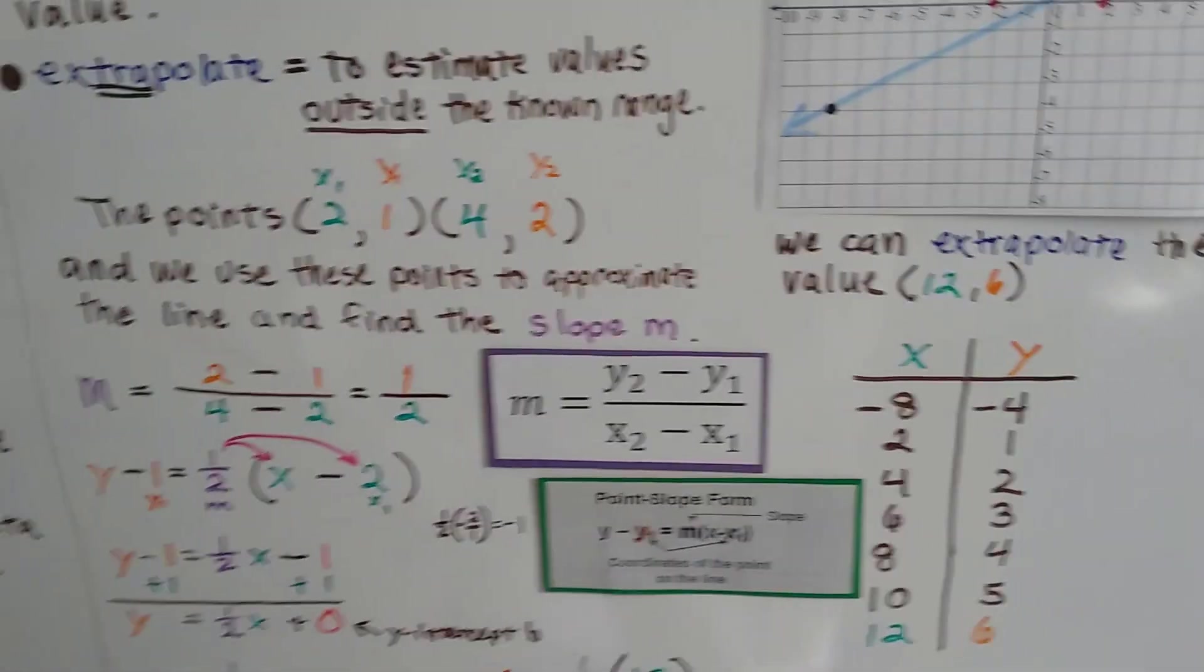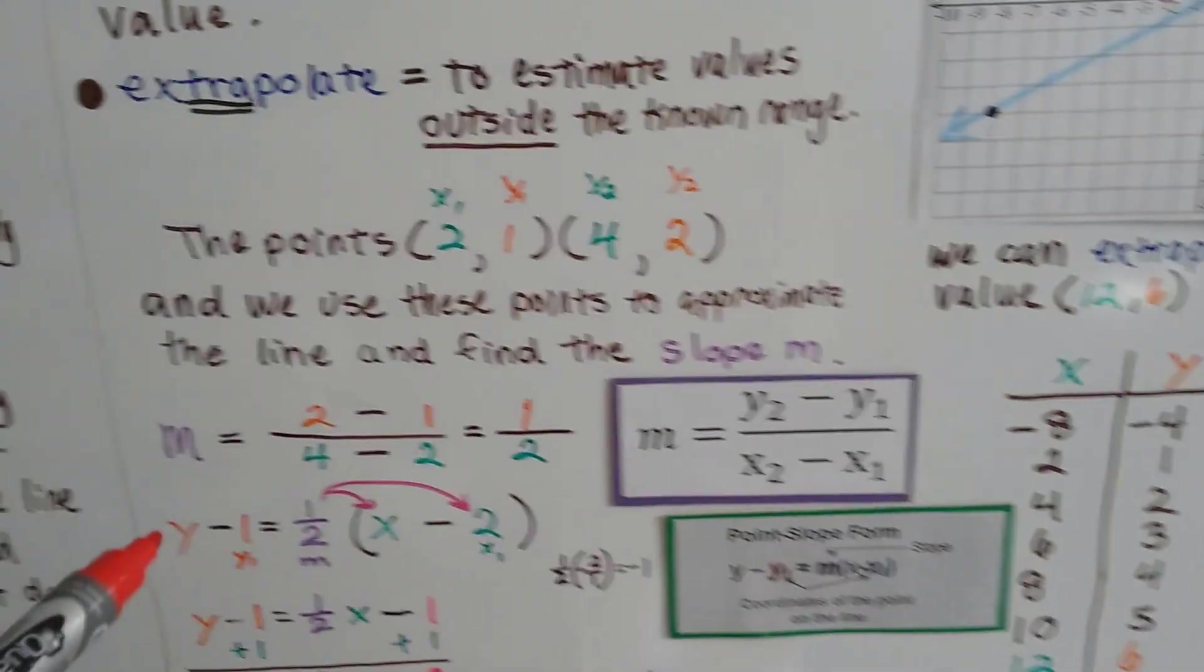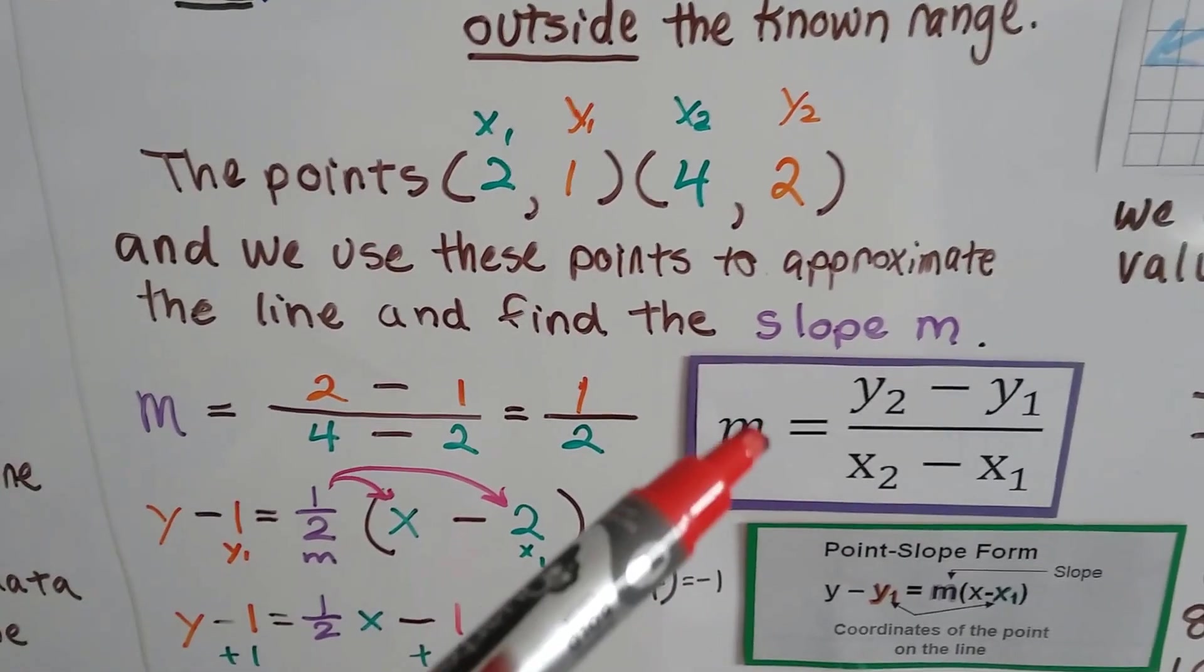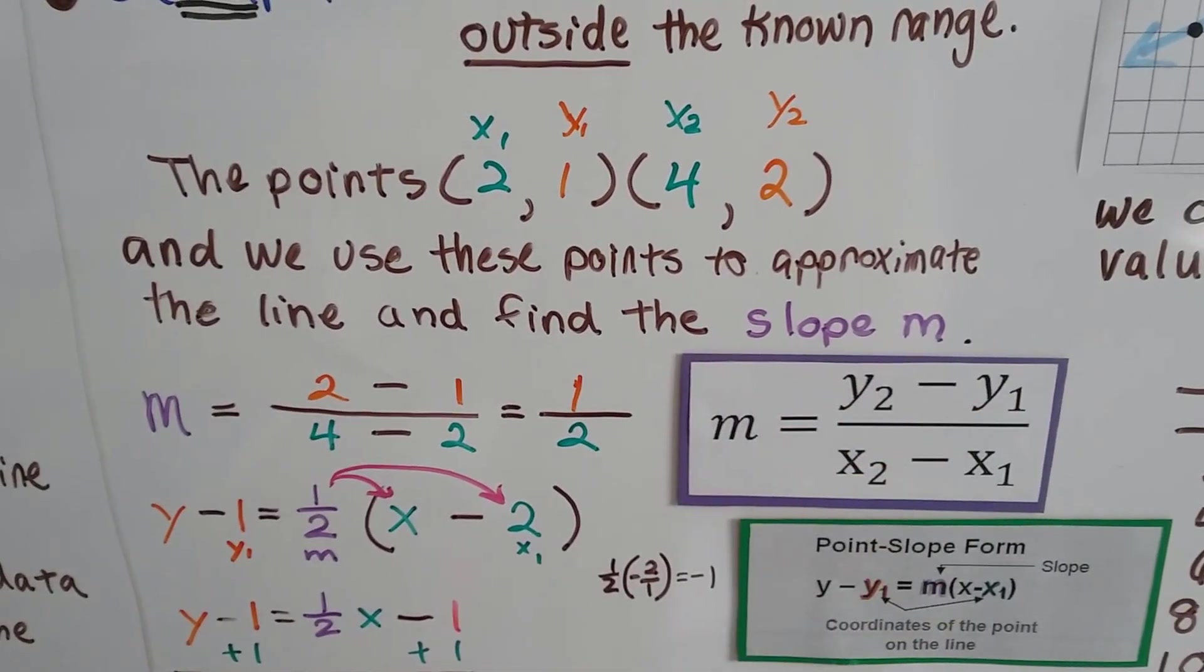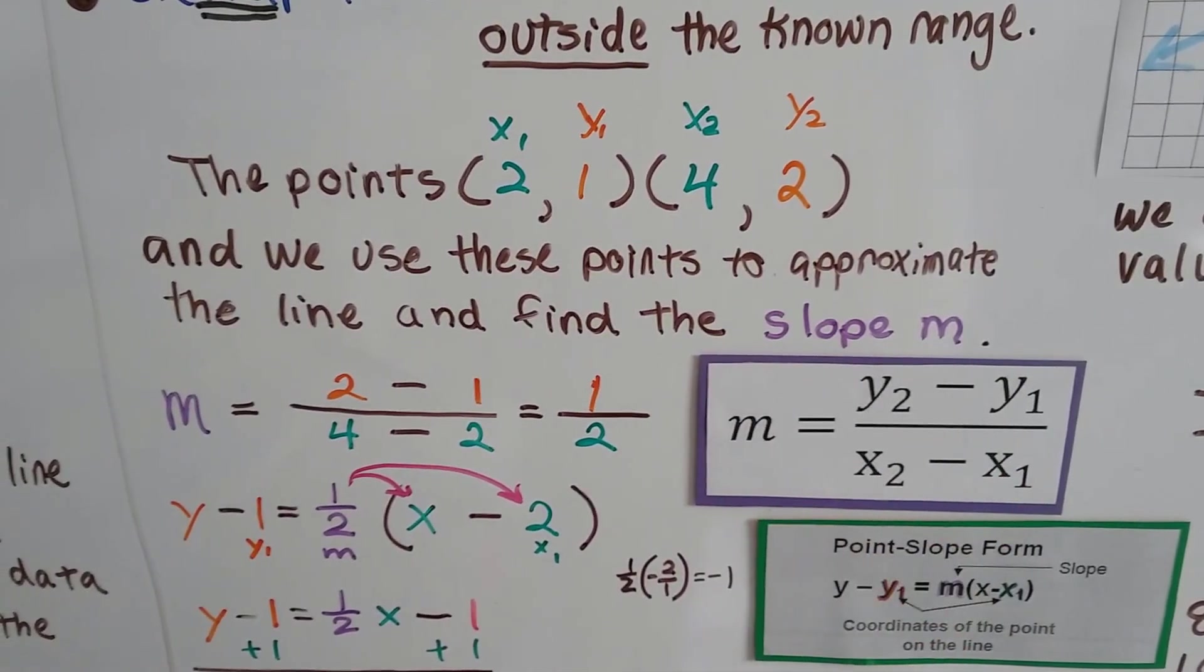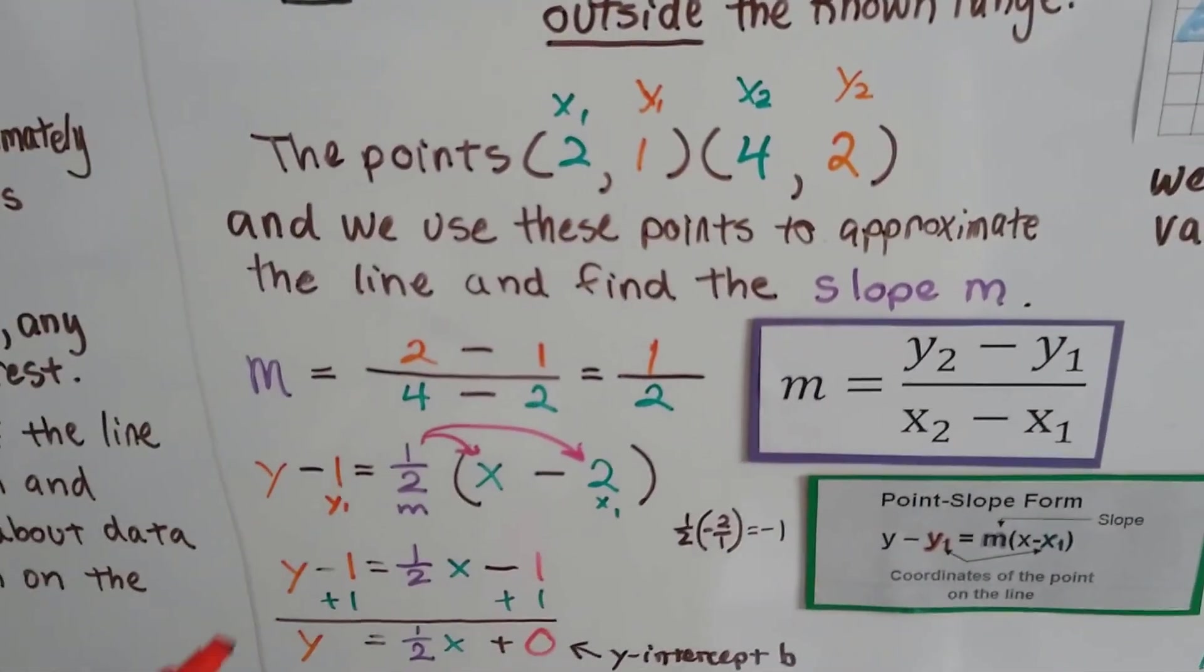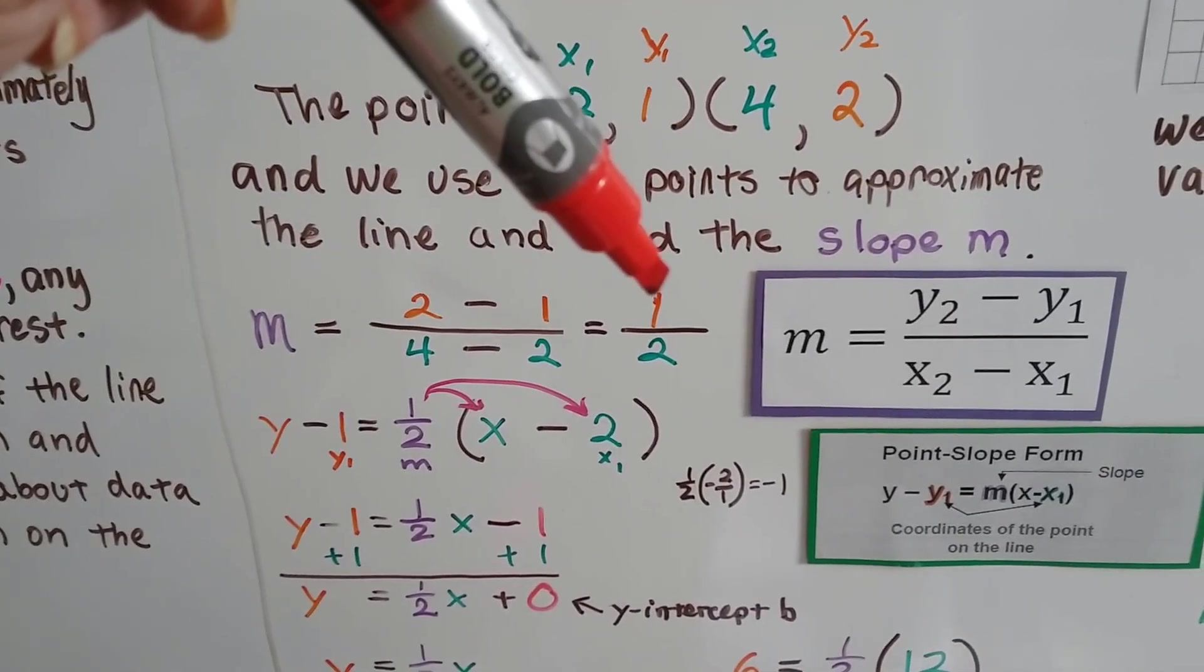So we can take the points 2, 1, and 4, and 2 and can use these points to approximate the line and find the slope m. So we use our slope formula, the second y value minus the first y value on top of the second x value minus the first x value. And we can use these ordered pairs from our function table as our x1, y1, x2, y2. And we find the slope and it turns out to be a half.